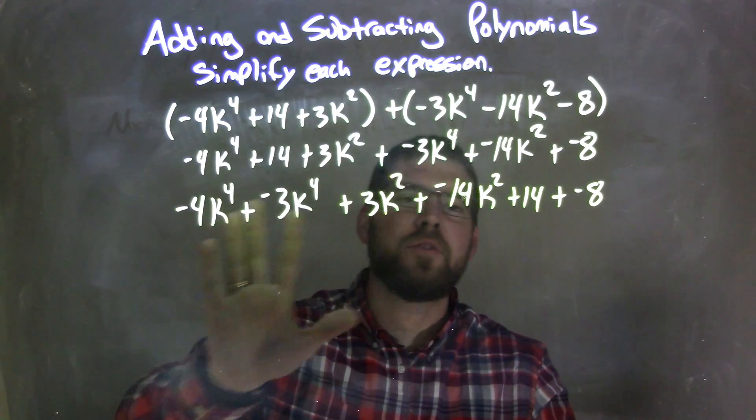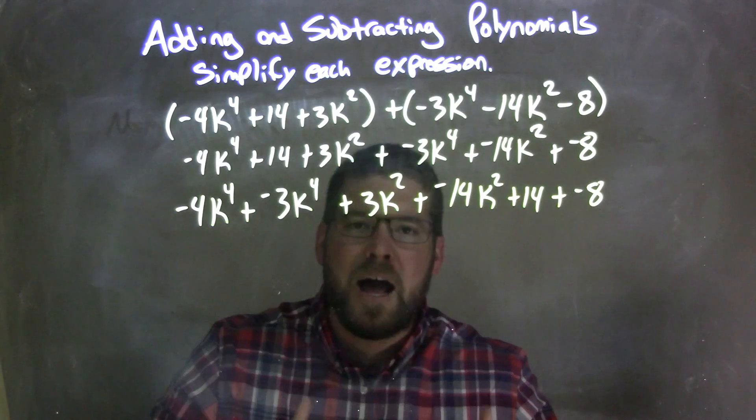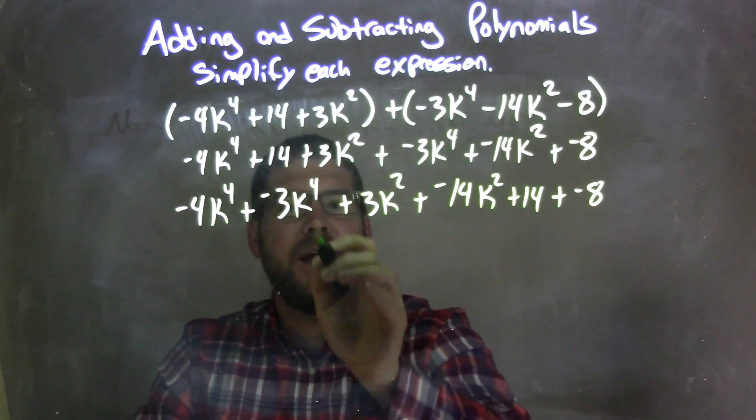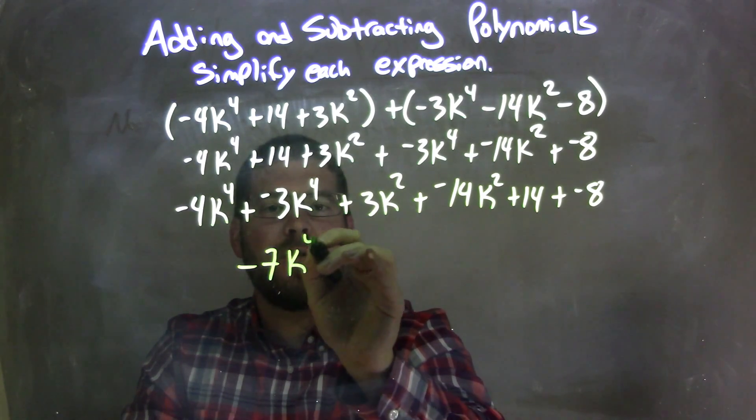Okay, now we have our highest degrees first to our lowest degrees. So now let's simplify. Negative 4k to the 4th, plus a negative 3k to the 4th, is negative 7k to the 4th.